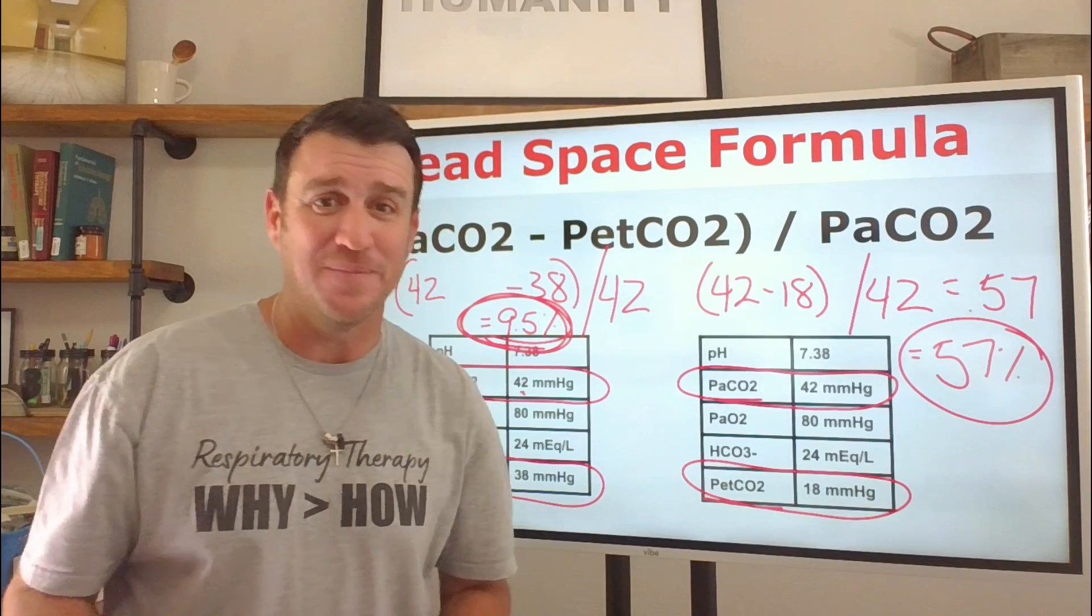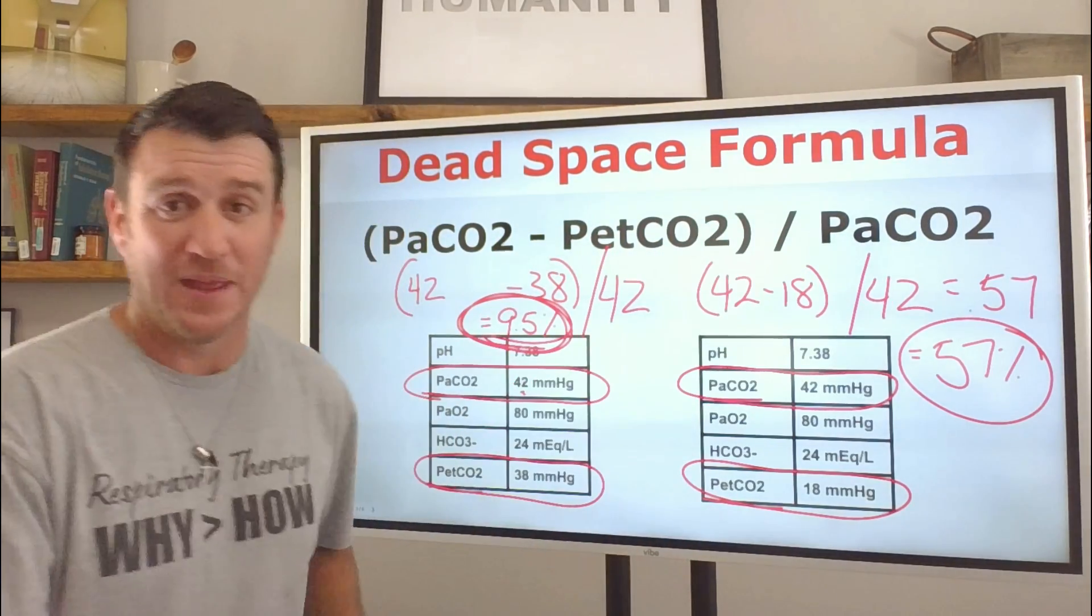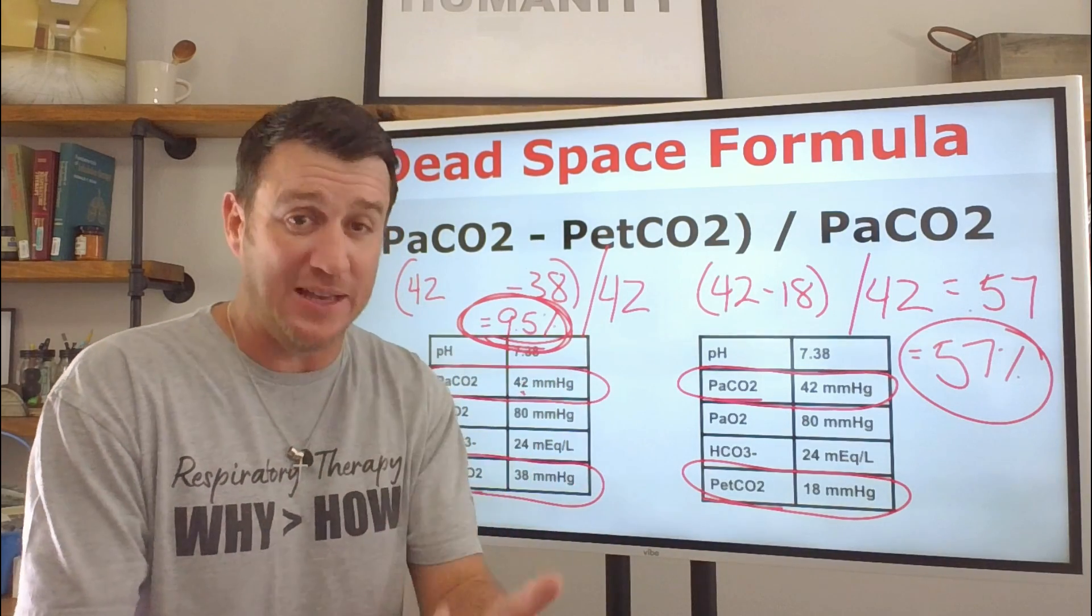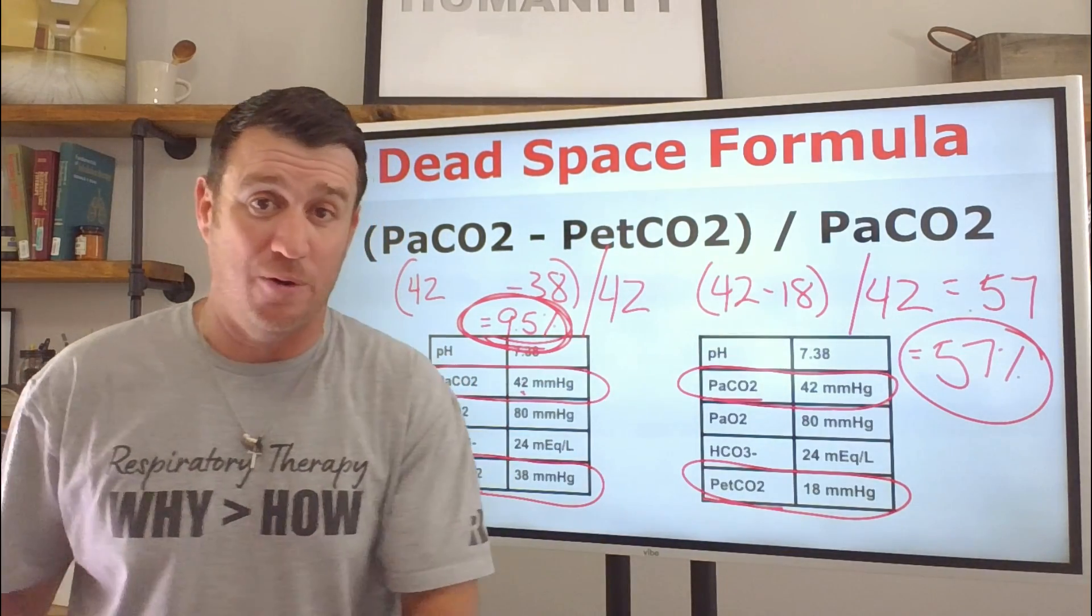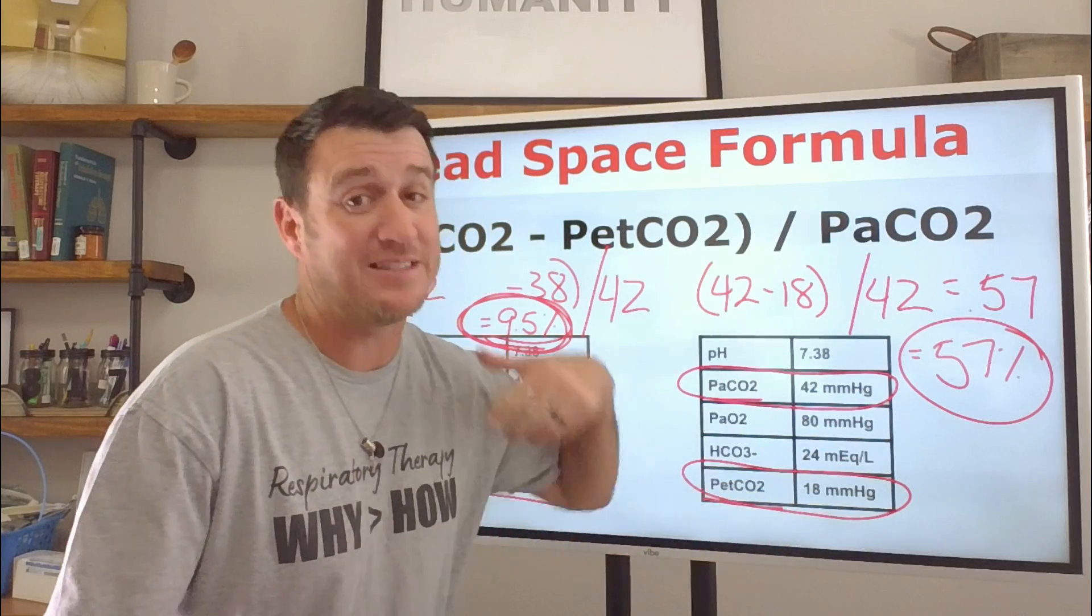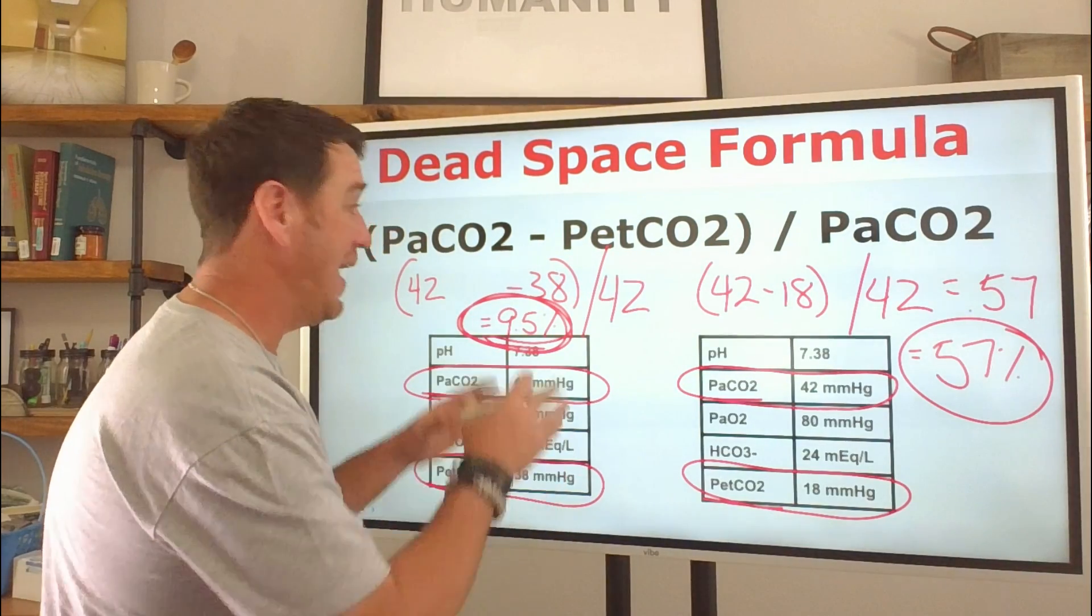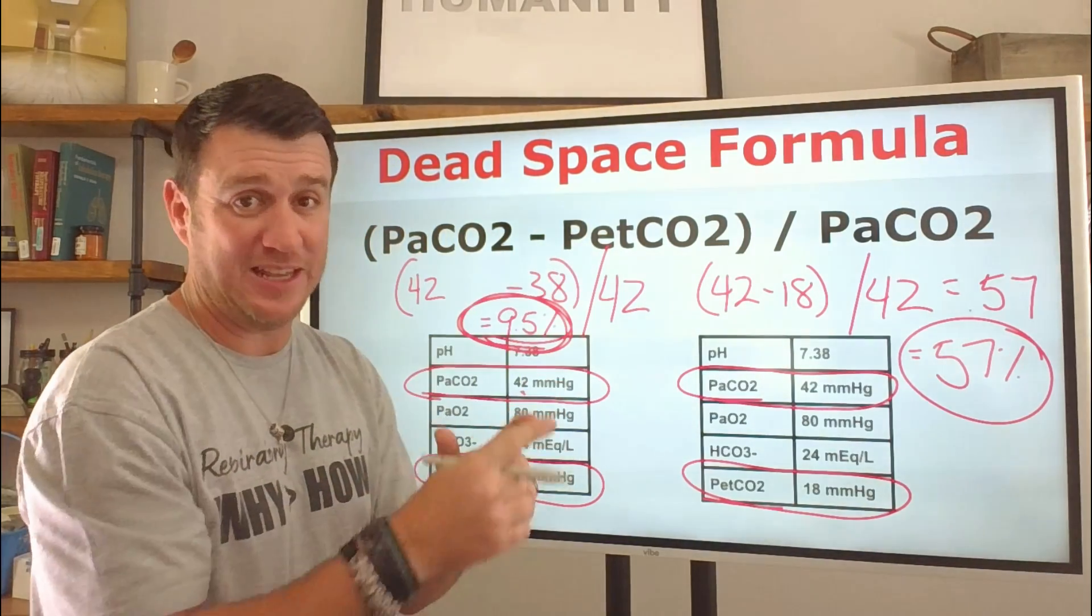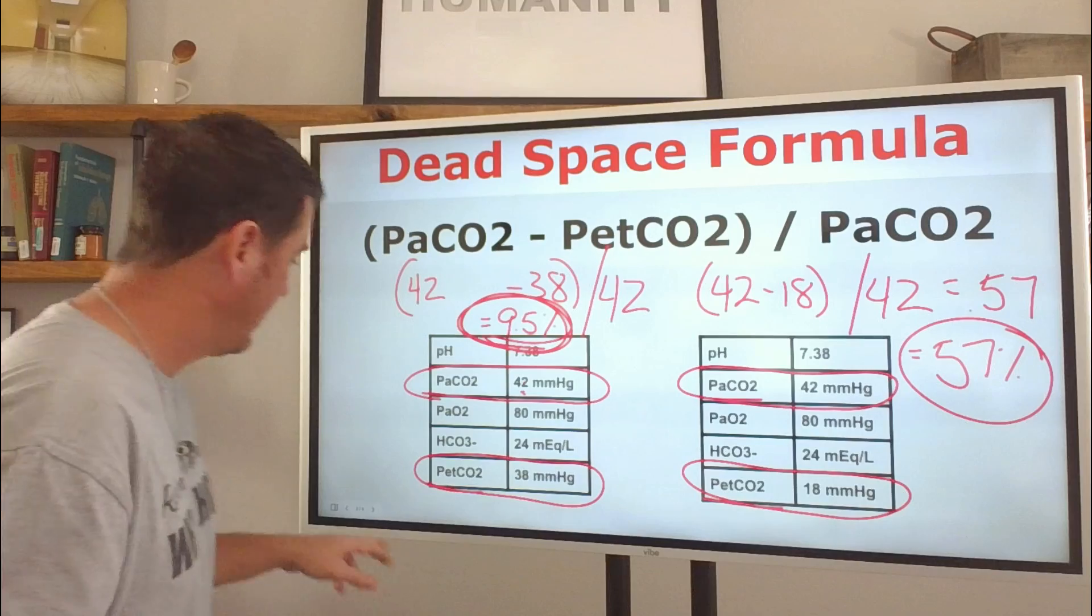If they don't give you the end tidal CO2, you can't calculate effective tidal volume. You can't calculate VD to VT. So your first clue that this is a VD to VT question is the fact that they give you all of the information. You're going to get lots of questions and they're going to give you lots of data within all of those questions. But when they're asking about a dead space problem, such as a fat emboli associated with a fractured femur, they have to give you end tidal CO2. They're only going to give you that information when you need it.